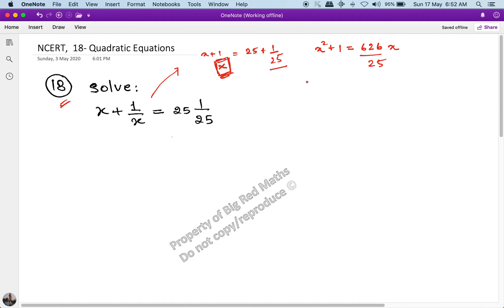Now, I will multiply the whole equation by 25. So, this will be 25x squared minus of, sorry, plus of 25 is equal to 626x.